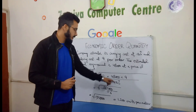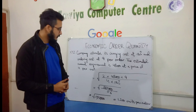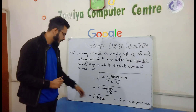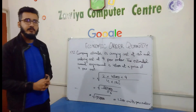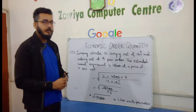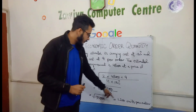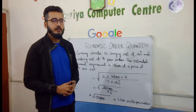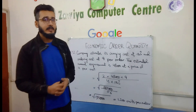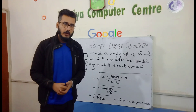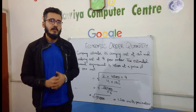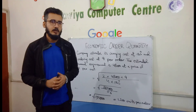Multiplying 2 by 48,000 by 9 gives 864,000, divided by 4 multiplied by 15% which is 0.6, giving 1,440,000. Taking the square root of that, we get 1,200 units per order. So the Economic Order Quantity is 1,200 units — the order size that minimizes all costs.